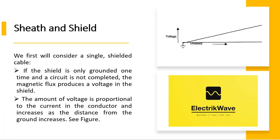We first will consider a single shielded cable. If the shield is only grounded one time and a circuit is not completed, the magnetic flux produces a voltage in the shield. The amount of voltage is proportional to the current in the conductor and increases as the distance from the ground increases.